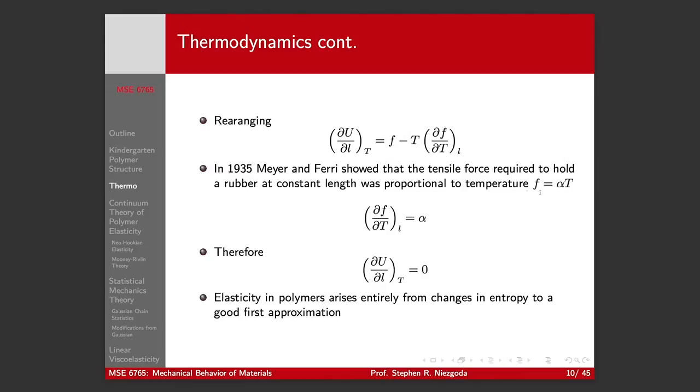So we can plug this relationship in. So partial f partial t at constant length is just alpha. We plug that up here and we get that the change in internal energy with respect to our change in length at constant temperature equals zero.